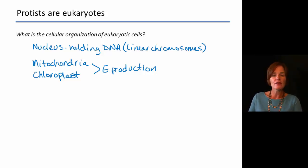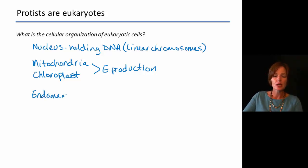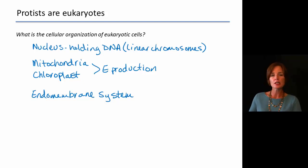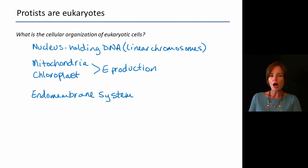We will also have an endomembrane system. The endomembrane system includes a lot of other compartments and components, such as the endoplasmic reticulum, the Golgi apparatus, lysosomes, and vacuoles — all of those are going to be components of the endomembrane system.